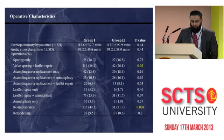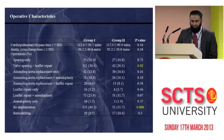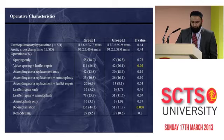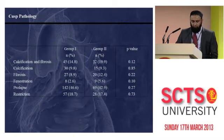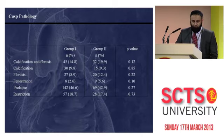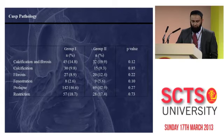In terms of operations performed, we found that when the valve-sparing operation — including re-implantation or remodeling — was used with or without leaflet repair, there was a lesser incidence of mild AI compared to no AI. Looking at cusp pathology, there was no significant difference between the two groups in terms of calcification, fibrosis, fenestration, or prolapse restriction, with prolapse being the most common pathology followed by restriction.